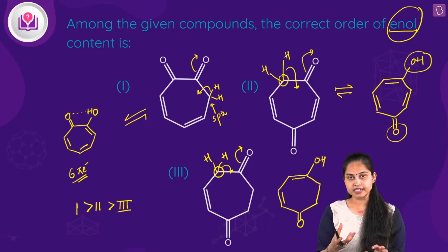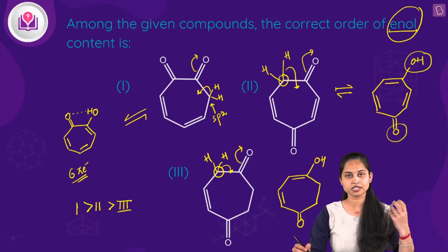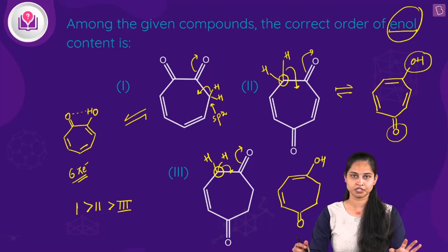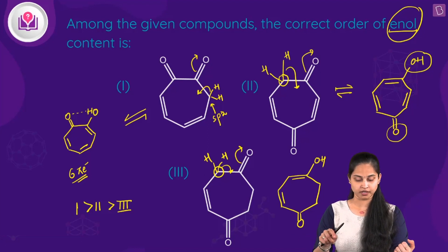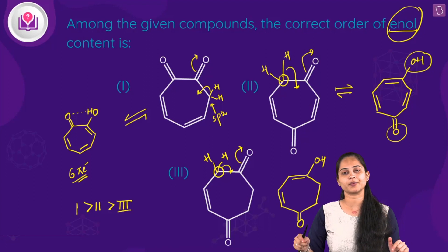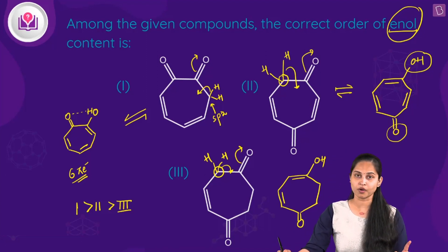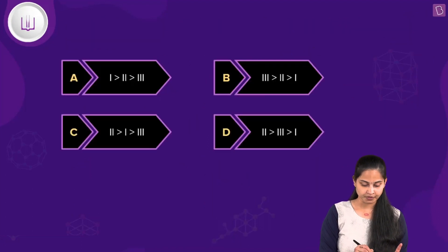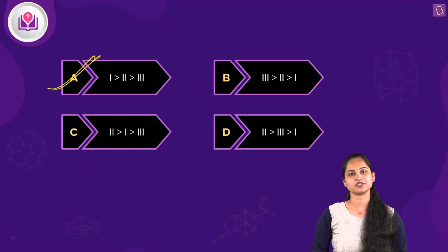For the third structure, the enol form does not introduce aromaticity and there is no intramolecular hydrogen bonding either, giving it the lowest enol content. The correct order of enol content is: compound 1 > compound 2 > compound 3, so option A is the right answer.